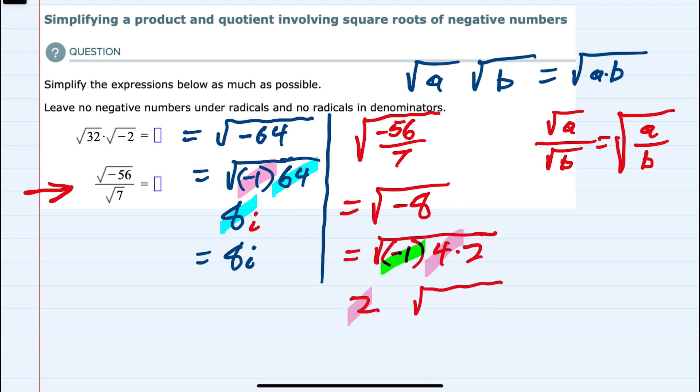The square root of negative 1 can also come outside the radical as an i. And then the only thing left inside the radical is the other 2. So this expression has been simplified to 2i square roots of 2.